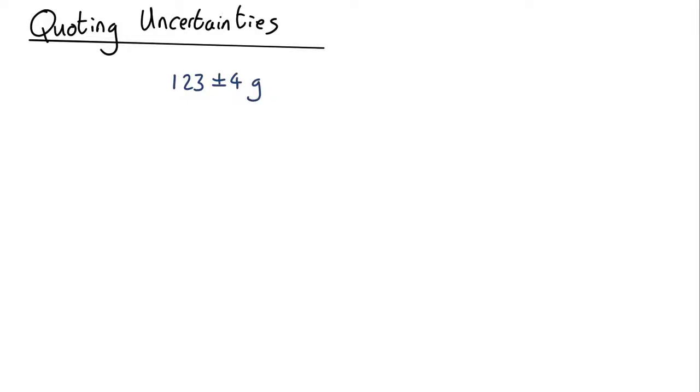Next rule: Don't generally quote your uncertainty to more than one significant figure. Don't call it 4.1 or 4.13. If the uncertainty was 40 grams—let's say we calculated 43 grams—we would quote that as 40. We wouldn't quote the second significant figure, the 3.